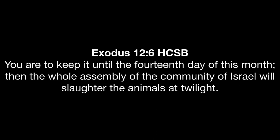Next we come to Exodus chapter 12 verse 6, which says: 'You are to keep it — speaking of the Passover animal — until the 14th day of this month.' We talked last week about how the month refers to the 14th day of the lunar month or the moon. 'Then the whole assembly of the community of Israel will slaughter the animals at twilight.' The animal is to be slaughtered on the 14th day of the moon, which kicks off the Passover. The plague came over Egypt that night — I believe on the 15th day of the moon — but the slaughtering of the lamb began on the 14th.